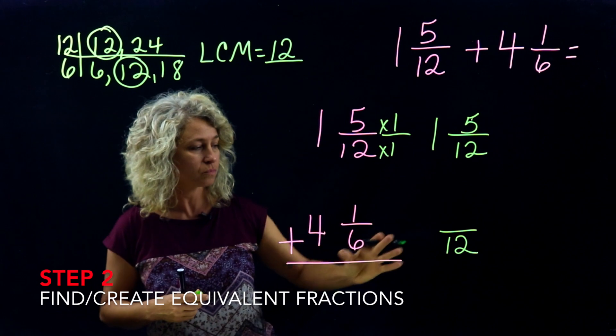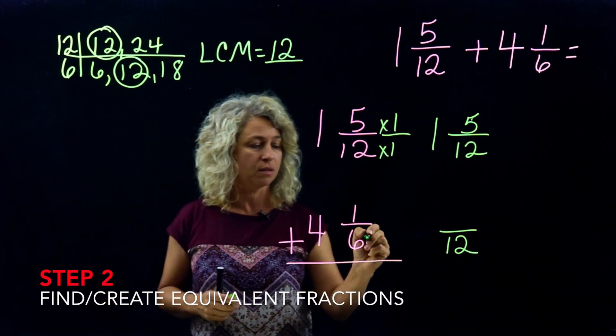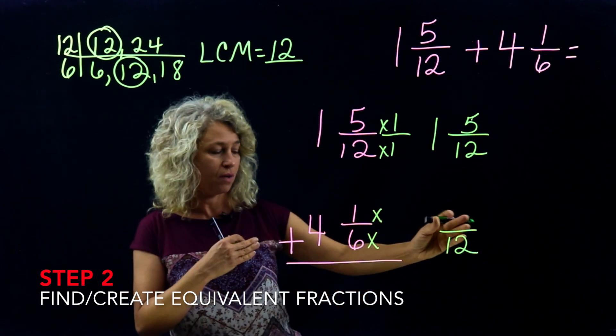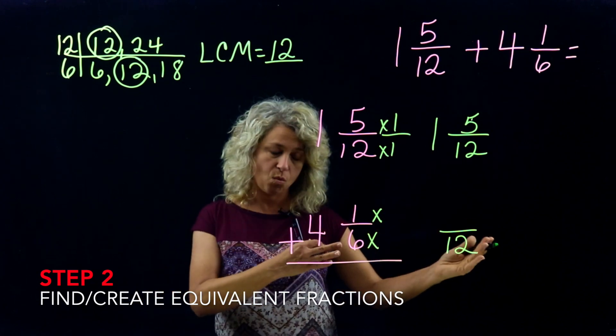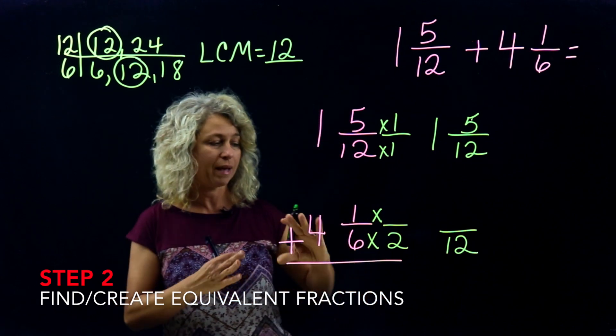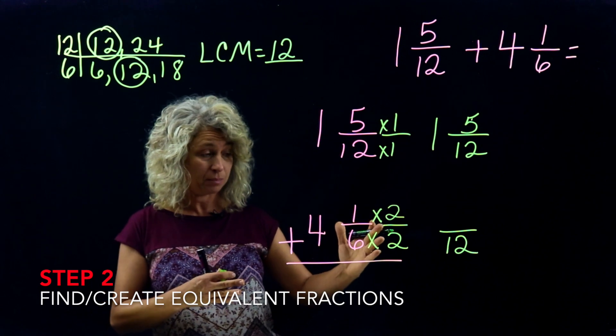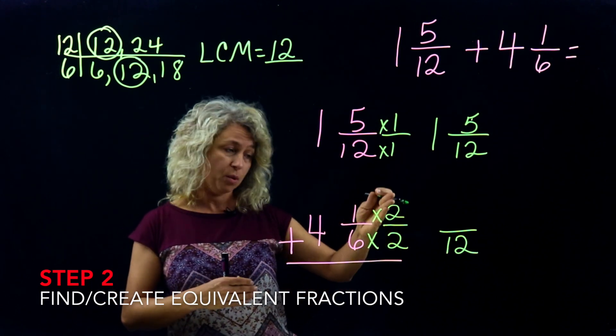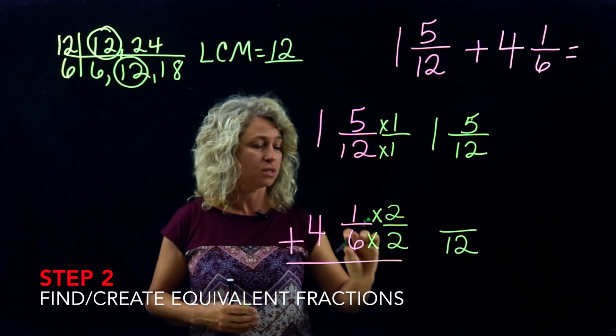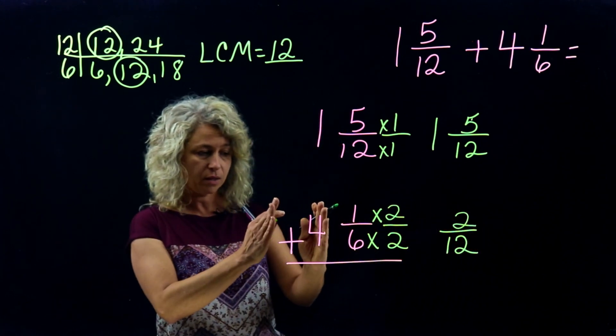But it's different down here because when I'm making an equivalent fraction, I'm thinking each time, well how am I getting from a 6 to a 12? And 6 times what is 12? So times 2. And remember when we're making equivalent fractions, anything with the same number on the top as the bottom, this will give us, if you multiply a numerator and a denominator with the same number, then you will get an equivalent fraction. So 6 times 2 is 12, 1 times 2 is 2. Don't forget to carry this whole number on over.